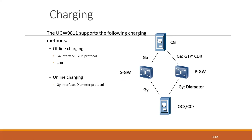Previously, postpaid was charged via offline charging — you had a bill at the end of the month, charged via CDRs. Prepaid was charged via the online charging interface. Now both have moved to online charging, since your post packages ensure that you have sufficient quota available. That is the main difference between them.